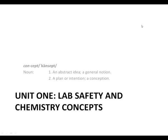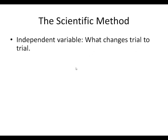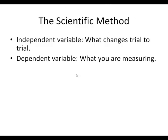This is your unit one lab safety and chemistry concepts review. First thing we want to talk about is the scientific method. Key things to know: you should know what an independent variable is — that's going to be what changes from trial to trial. You're also going to want to know what the dependent variable is.